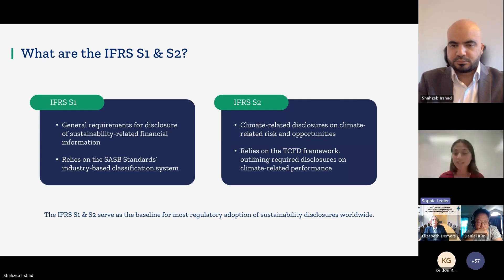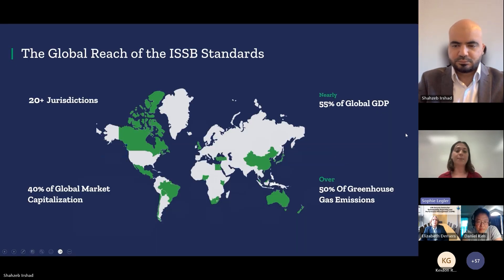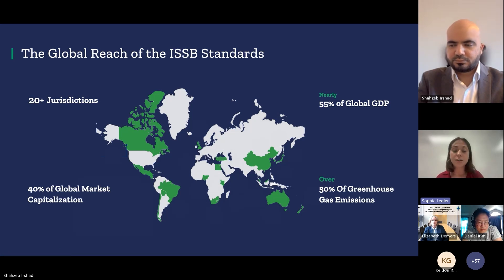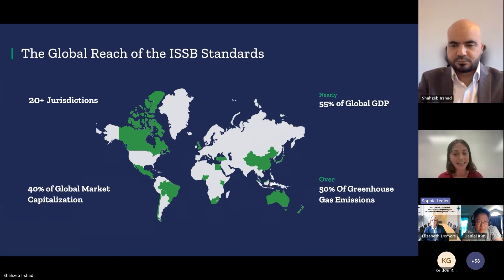Ultimately, S1 and S2 serve as the baseline for most regulatory adoption of sustainability disclosures worldwide. Over 20 jurisdictions worldwide have already or are in the process of adopting ISSB standards — and these are far from negligible on the global stage. Countries include Canada, the UK, Australia, New Zealand, China, Japan, Singapore, Brazil, and the list really goes on.